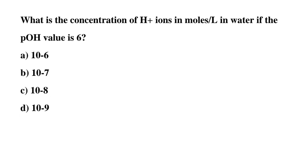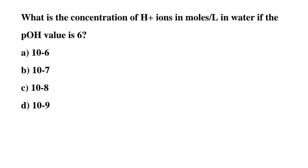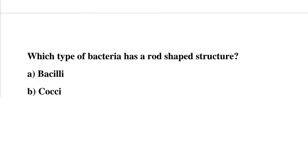Next question: what is the concentration of H⁺ ions in moles per liter in water if the pH value is 6? Option A: 10^-6, option B: 10^-7, option C: 10^-8, option D: 10^-9. The correct answer is option C: 10^-8.